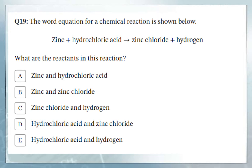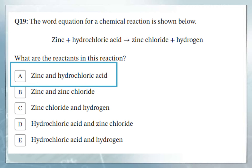Question number 19: the word equation is Zn plus hydrochloric acid gives zinc chloride and hydrogen gas. What are the reactants? Reactants are before the arrow, at the left side of the reaction. The answer is A: zinc and hydrochloric acid.